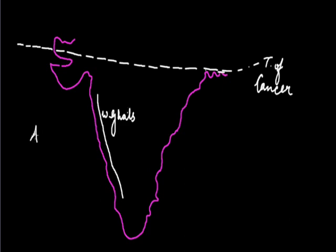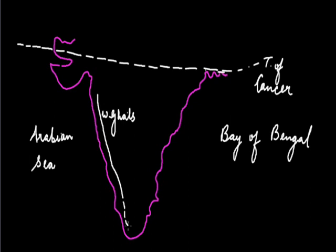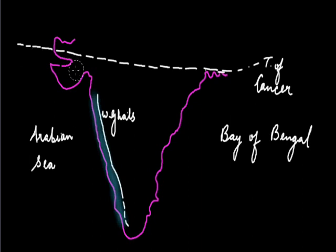On the western side of India we have the Arabian Sea, and in the east we have the Bay of Bengal. The West Coastal Plain lies between the Western Ghats and the Arabian Sea coast and spreads from Gujarat to Kanyakumari, which is the southern point of India. It is a narrow plain with an average width of 64 km, and going from north to south it goes on narrowing.